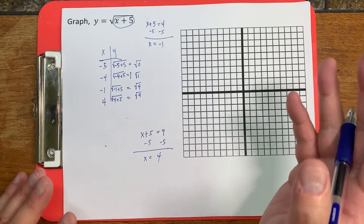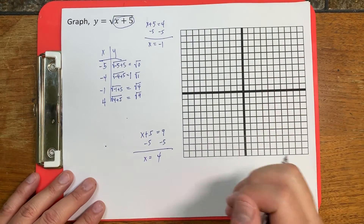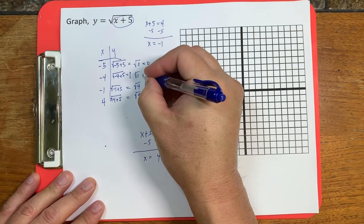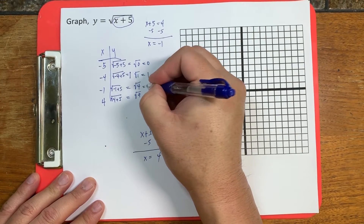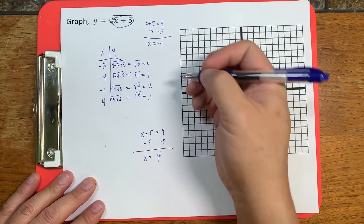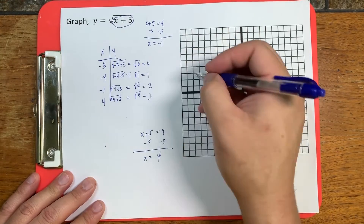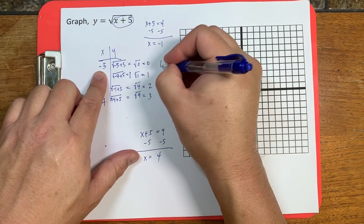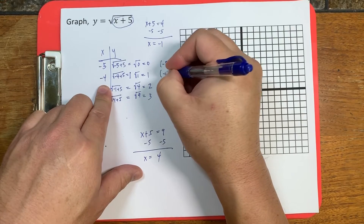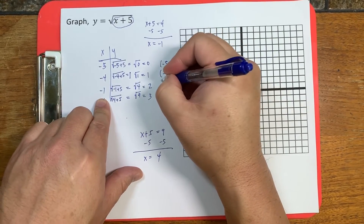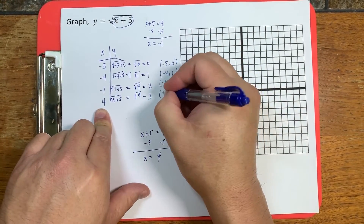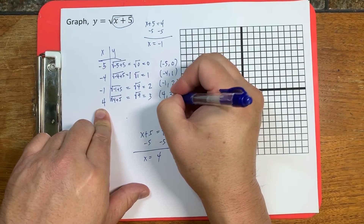Now when I look at the xy coordinates to graph: the square root of 0 is 0, square root of 1 is 1, square root of 4 is 2, square root of 9 is 3. And we would graph the coordinate points: negative 5 comma 0, negative 4 comma 1, negative 1 comma 2, and 4 comma 3.